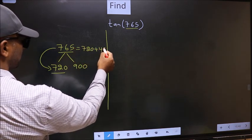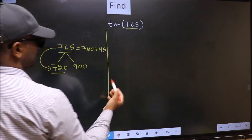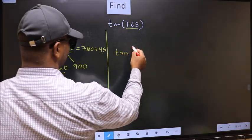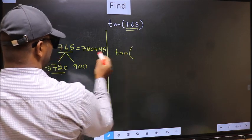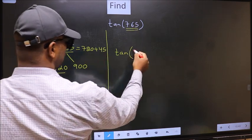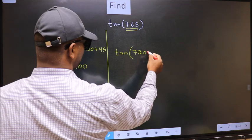So this will become tan. In place of this, we write: 720 plus 45.